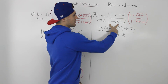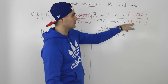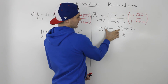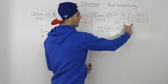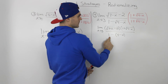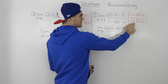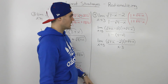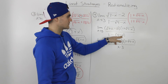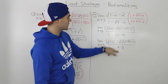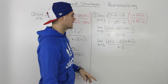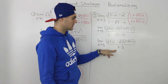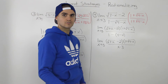Let's start by rationalizing the denominator to try to get rid of that square root. The conjugate of 1 minus the square root of 4 minus x is 1 plus the square root of 4 minus x. Multiplying by the conjugate over the conjugate, we keep the numerator terms separate. In the denominator, 1 times 1 is 1, and negative square root of 4 minus x times positive square root of 4 minus x gives negative (4 minus x). Distributing the negative simplifies the denominator to x minus 3.